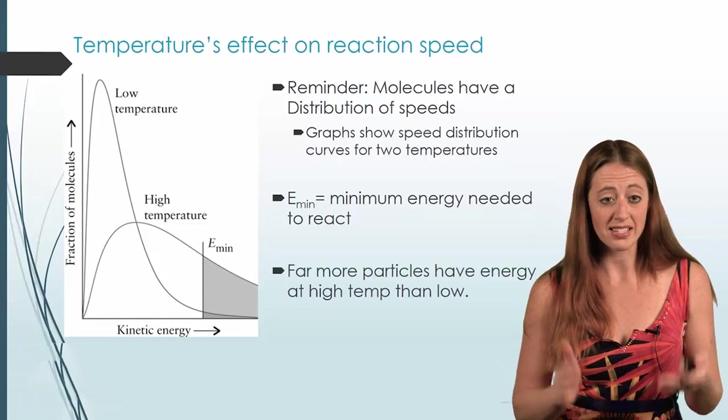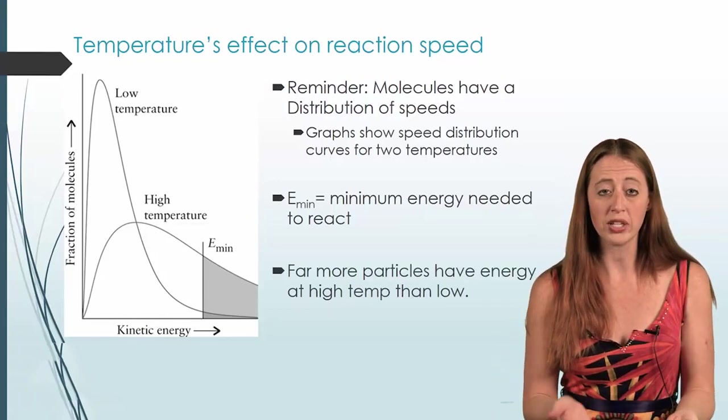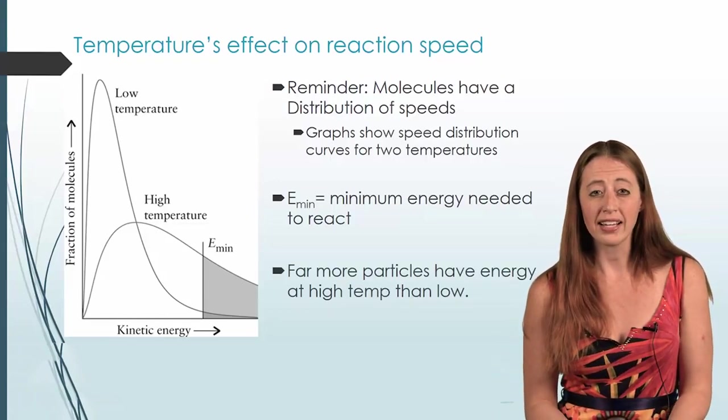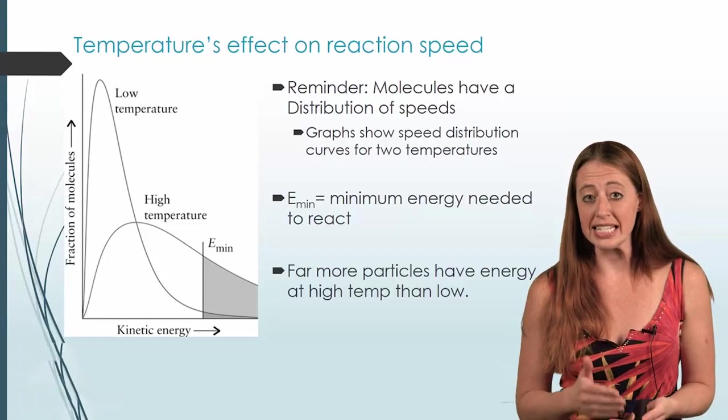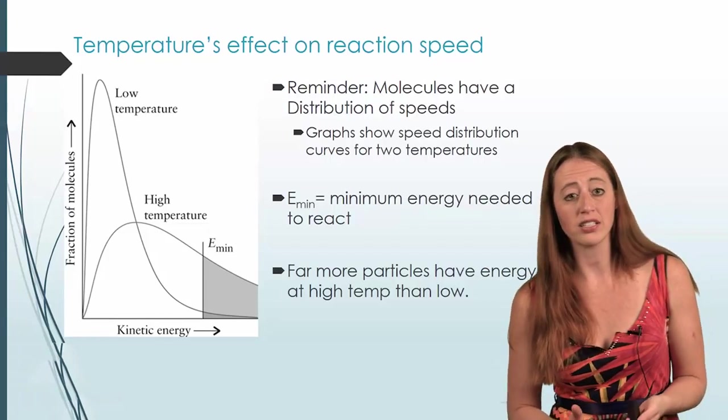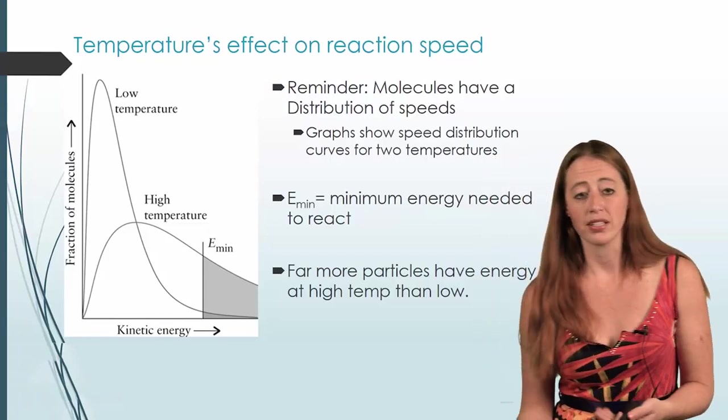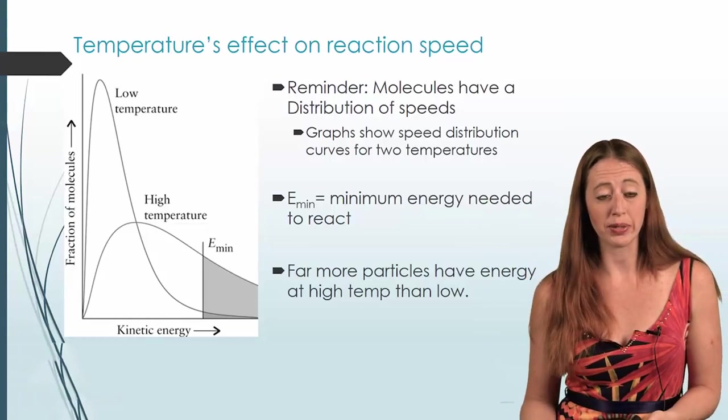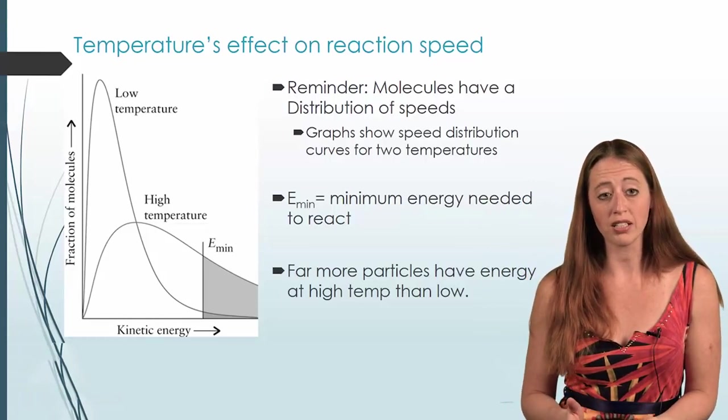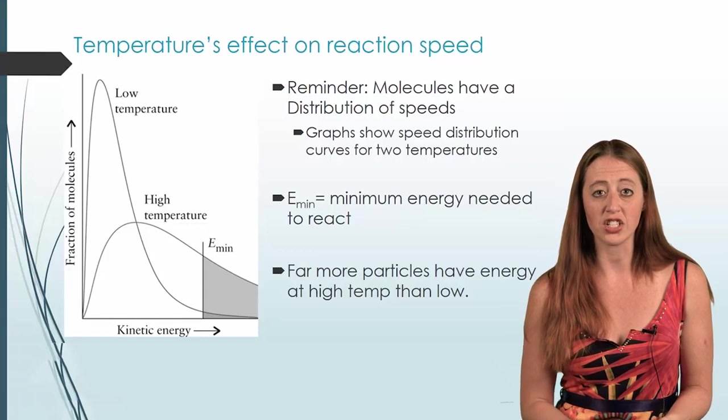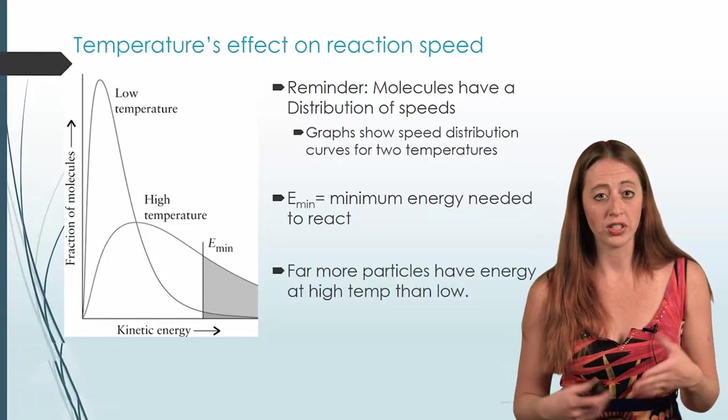This allows us to see in a very useful way, using the distribution graph, that there's a difference in speed with regards to the rate of the reaction. That's related to the speeds of our molecules, because they have to hit this energy threshold in order to have a reaction.